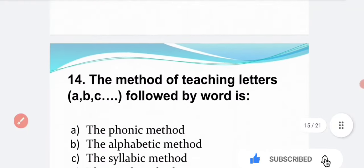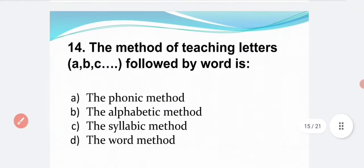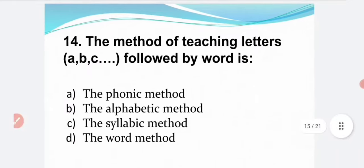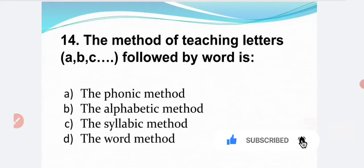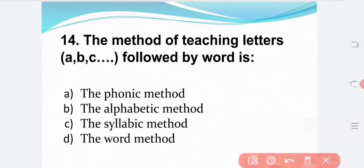Next bit. The method of teaching letters followed by a word is: Option A — the phonic method. Option B — the alphabetic method. Option C — the syllabic method. Option D — the word method. The correct answer is Option B: the alphabetic method.